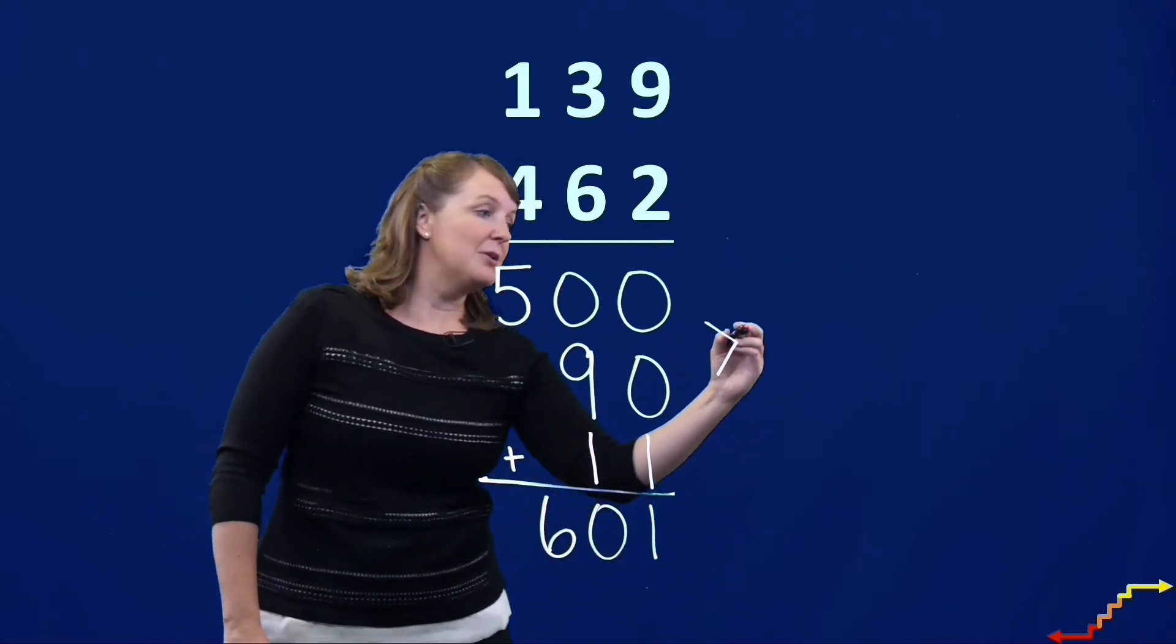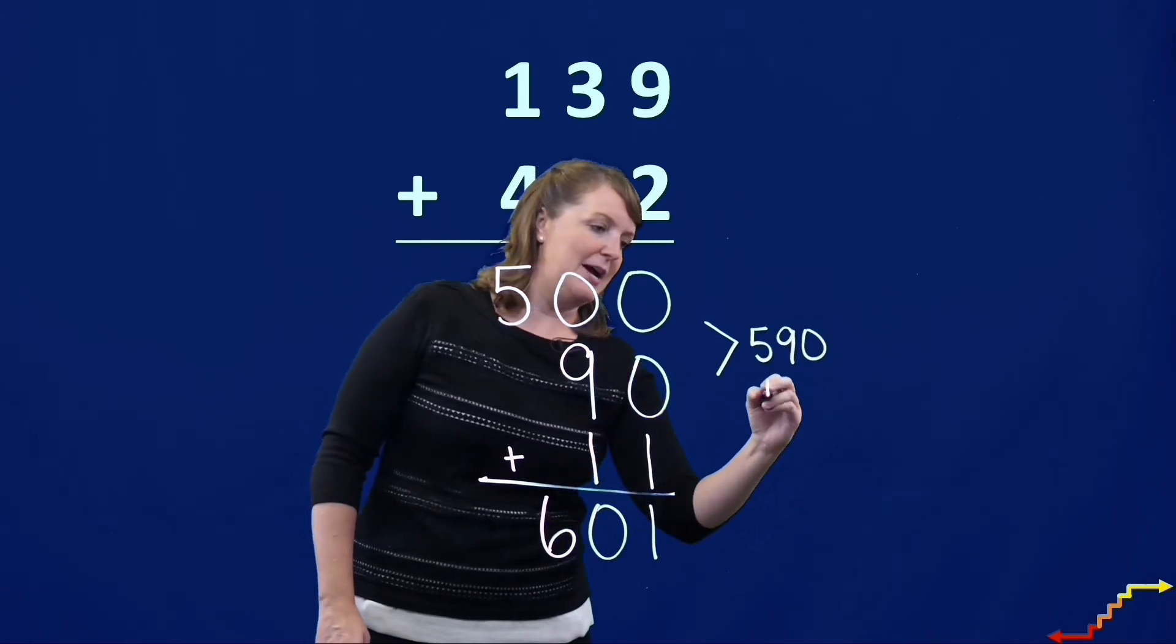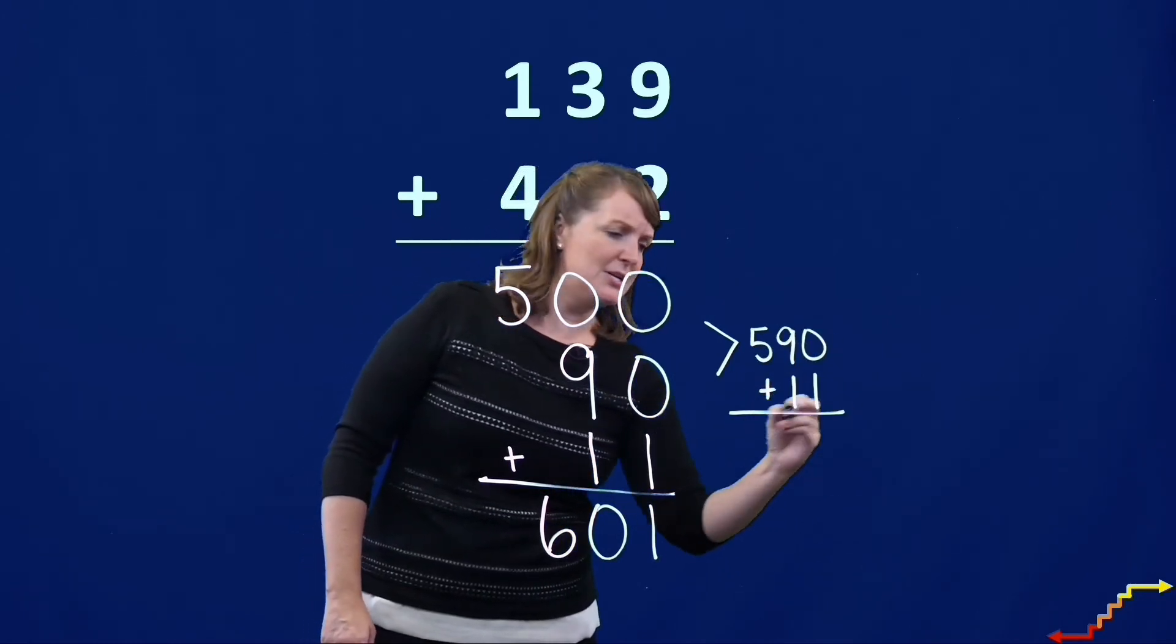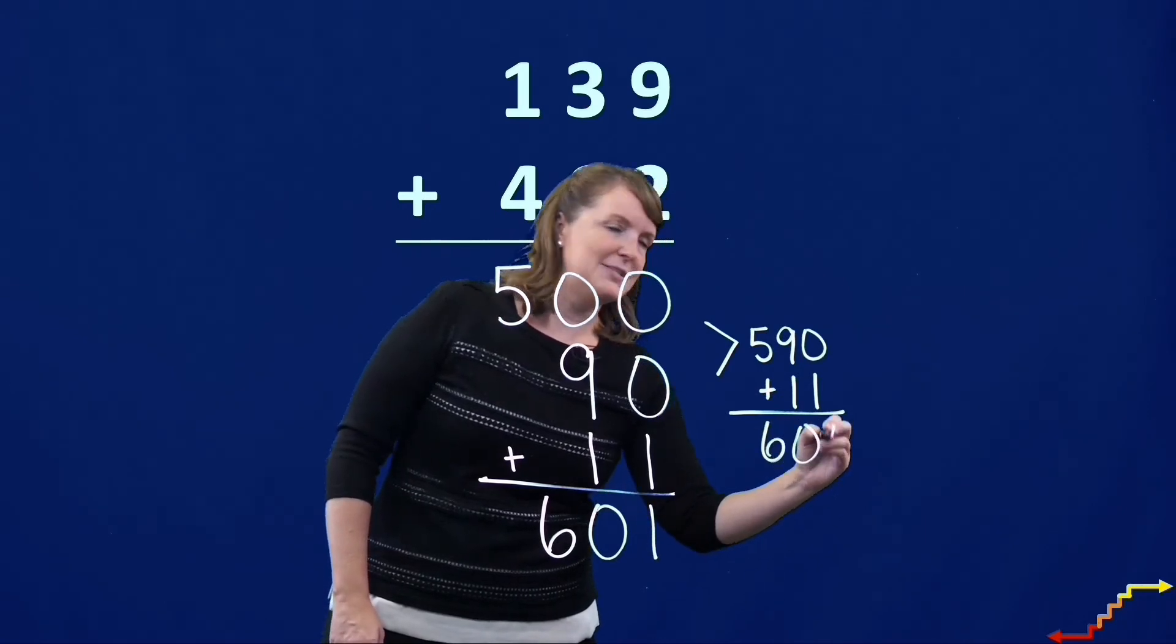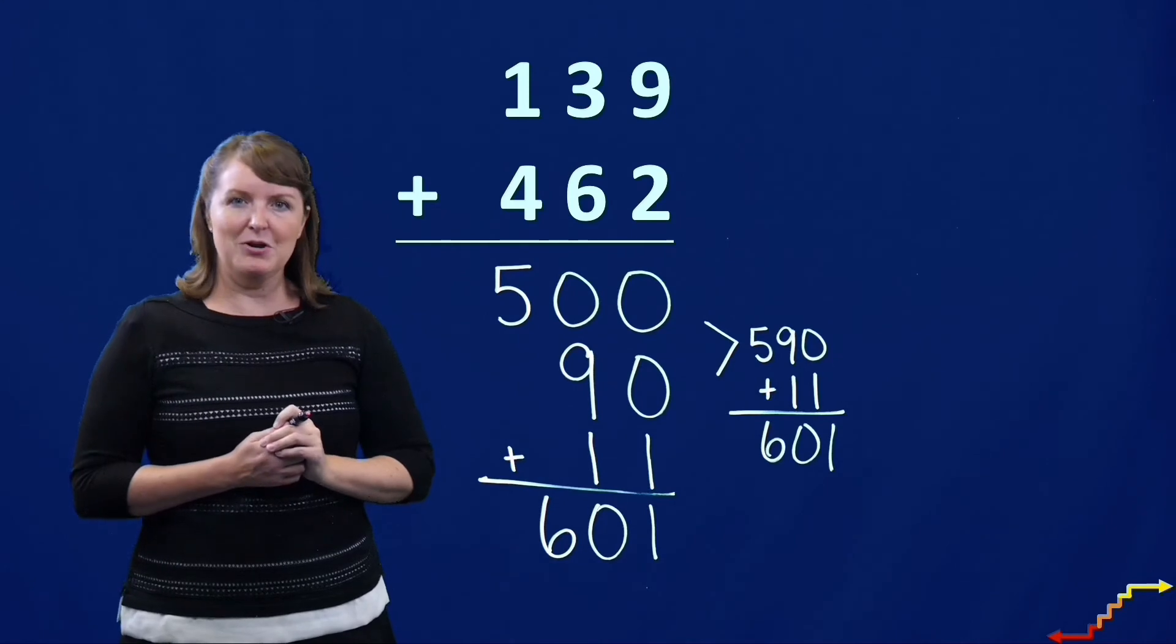Now if you need to, you're welcome to add together the different partial sums. Then I could add this. You're welcome to do any of the work that you need to over here on the side. But when we have 139 and we add 462, our sum is 601.